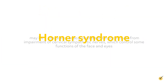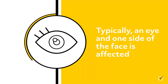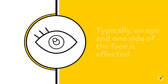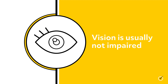Horner syndrome may be a congenital or acquired disorder and results from impairment of cervical sympathetic nerves, which control some functions of the face and eyes. Typically, an eye and one side of the face is affected. The affected eye exhibits ptosis or drooping of the upper eyelid and pupil constriction, and sweating is absent on that side of the face. Vision is usually not impaired.